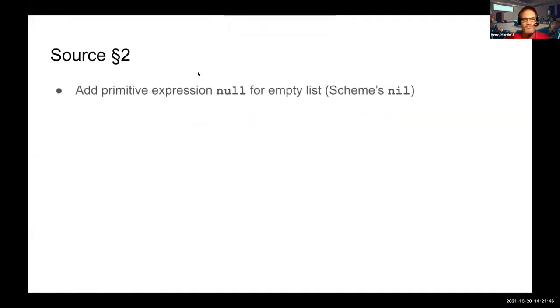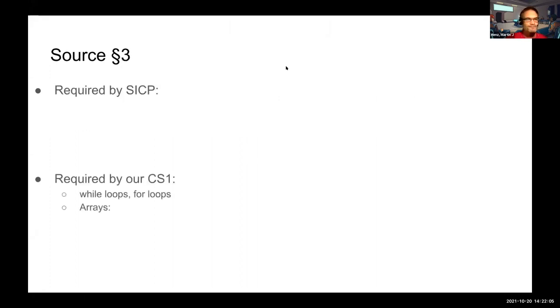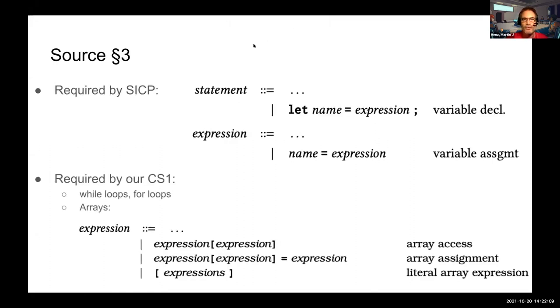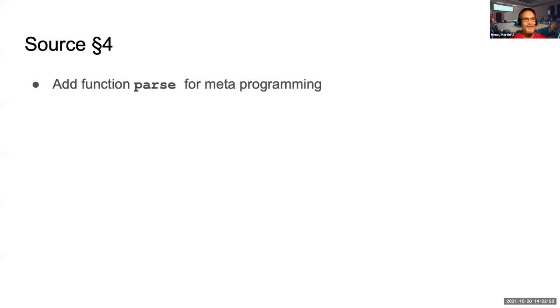Source Chapter 2 adds primitive expressions for lists and pairs — data structures is the theme of Chapter 2 of SICP. We add the null primitive expression in JavaScript, pair, head and tail to mirror Scheme's cons, car and cdr, and we add a library for list processing. Source Chapter 3 adds constructs for stateful programming: the let declaration for lexically scoped variables and variable assignment expressions, while loops, for loops, and arrays in their minimal form including array literal expressions and array access and assignment. Finally, Source Chapter 4 introduces a parse function that allows us to do metaprogramming.